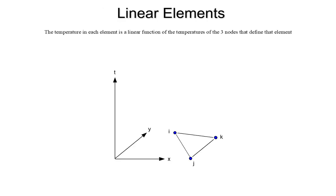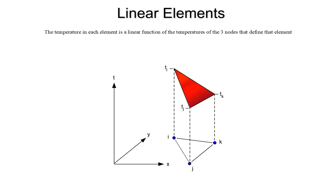We're going to confine ourselves to linear elements, meaning the temperature inside of an element is a linear function of the temperatures of the three nodes that define that element. Visually, for element I, J, K, the temperature inside that element is a plane that passes through Ti, Tj, and Tk — almost like a pane of glass representing the temperature distribution everywhere inside that element. To do the area integrals element by element, we need the formula for the temperature inside a given element.